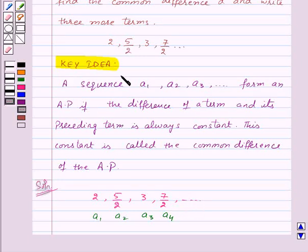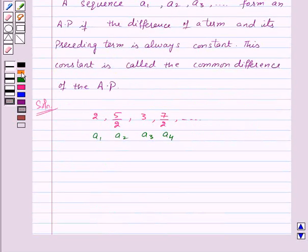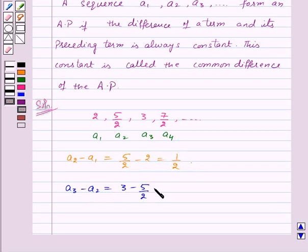So, according to the key idea, we will find out the difference of the term and its preceding term. So, first of all, A2 minus A1 will be equal to 5 upon 2 minus 2 which is equal to 1 upon 2. Next, A3 minus A2 is equal to 3 minus 5 by 2 which is also equal to 1 by 2.